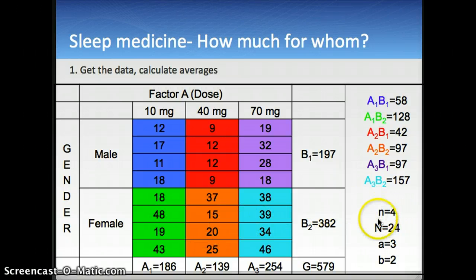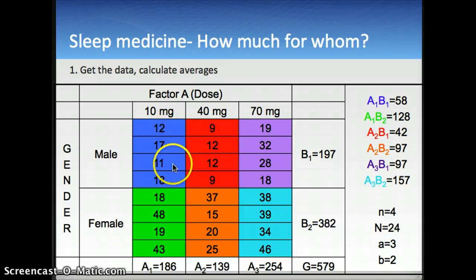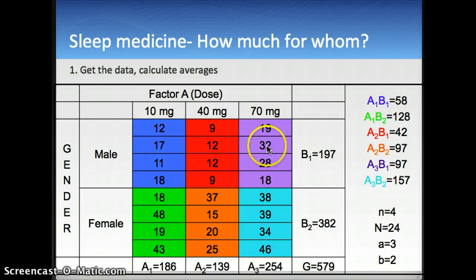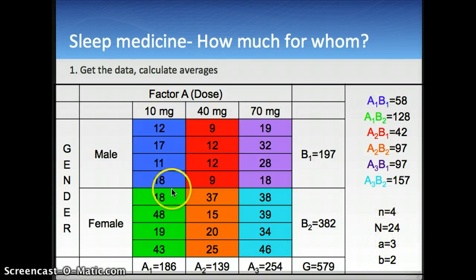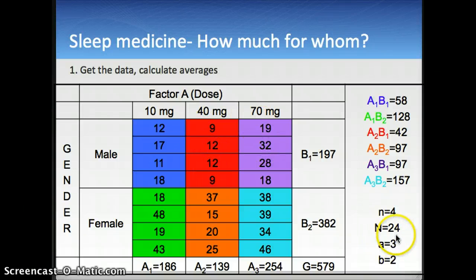The small n — the number of people per group — was 4, with 4 participants in each of the 6 cells. The total number of people was 24, since we have 6 groups times 4 participants each.